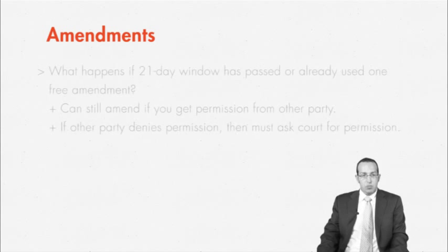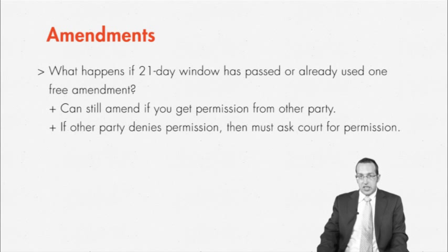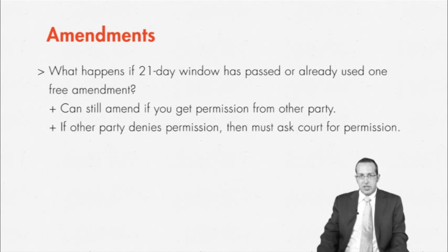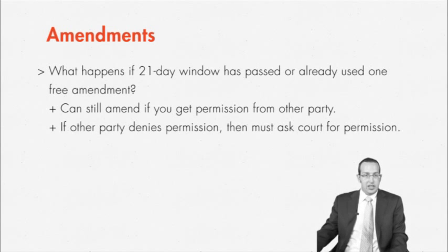Once your 21-day window for amendment has passed, or if you've already used your one free amendment, you can still amend your pleadings basically as many times as you want, but you first need to ask the other side for permission. Basically, you show them what you want to amend, explain what the issues are, and if they say yes, you're good to go. You just inform the court that the other side consented, file your amendment, and that's it.